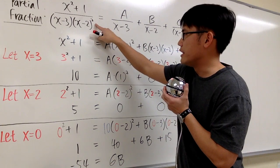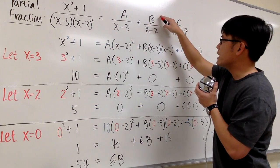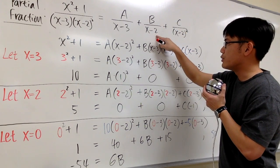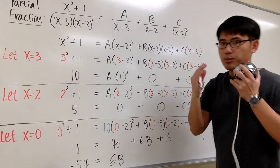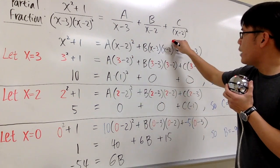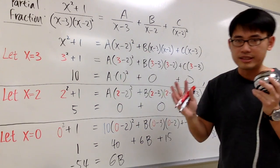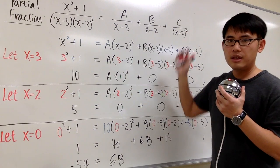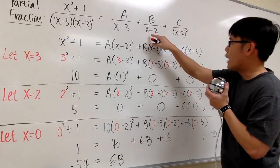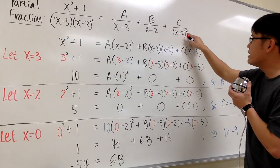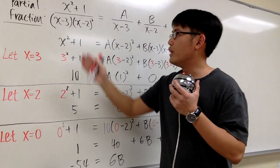For any repeated factor on the denominator, you have to make sure all the powers are present. So the second part, I'm going to write down some number b over x minus 2 to the first power. I'm not going to write the second power right away because all the powers have to be present. Then the third part is going to be c over x minus 2 to the second power. If this were x minus 2 to the fourth power, we would need x minus 2 to the first, second, third, and fourth — all powers must be present for a repeated factor.